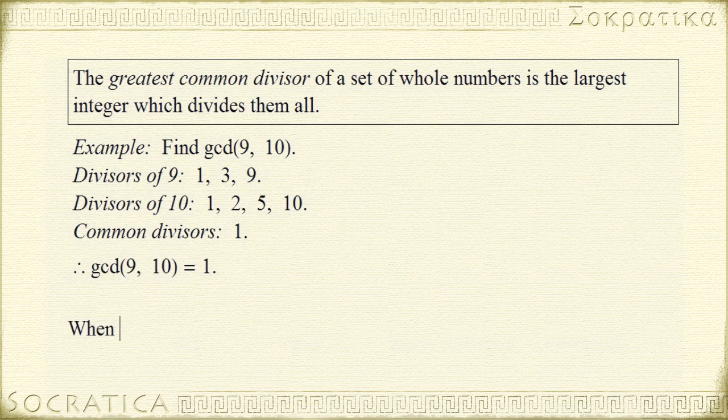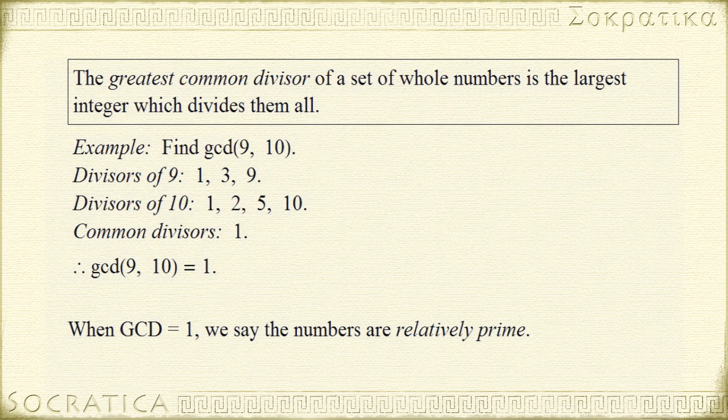Whenever the greatest common divisor of 2 integers is 1, we say those numbers are relatively prime. Now, the numbers themselves don't have to be prime numbers, but they're kind of prime relative to each other, meaning they have no factors in common other than 1.